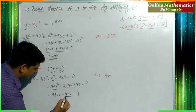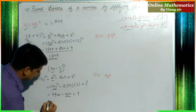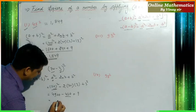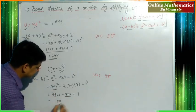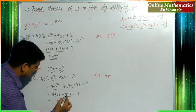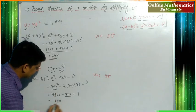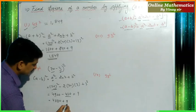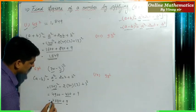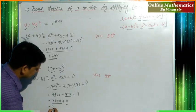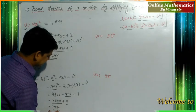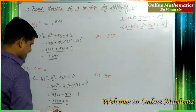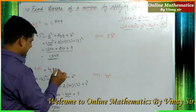We subtract 420 from 4900 to get 4480, then add 9, giving us 4489. So 67² = 4489.